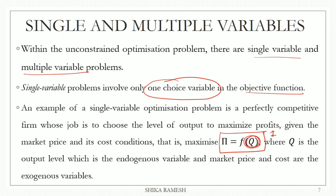Pi is the function of q, where q is the choice variable — this is a single variable problem. So q is the number of products sold, which the firm can control — how much output is produced. The profits can be maximized, and the firm chooses the number of products. This is the endogenous variable.